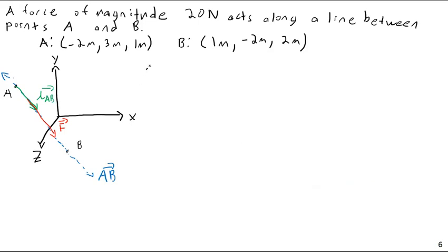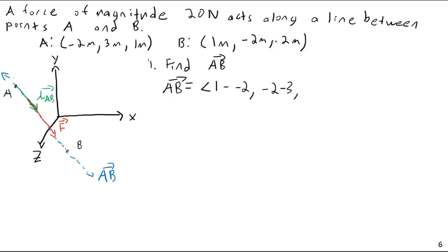First I need to get vector AB. AB is equal to just the difference of the coordinates — final minus initial. So it's going to be (1 minus negative 2), (negative 2 minus 3), (2 minus 1) — all in meters — which equals 3 meters, negative 5 meters, 1 meter.